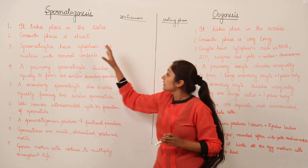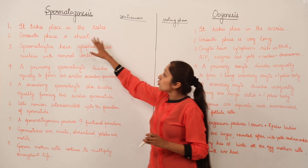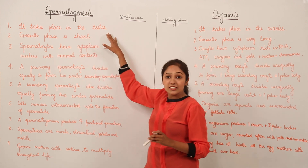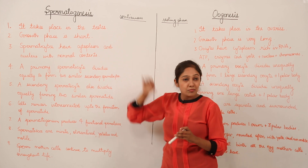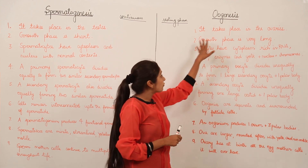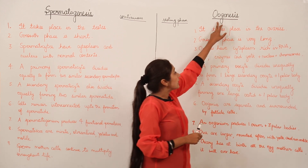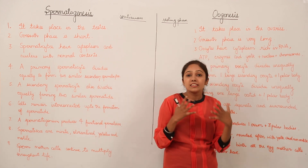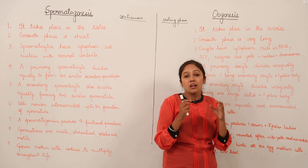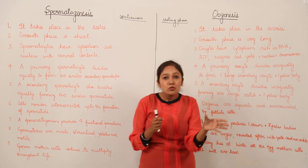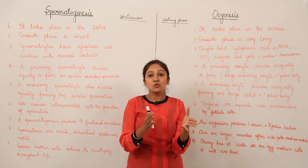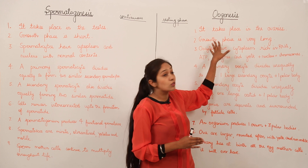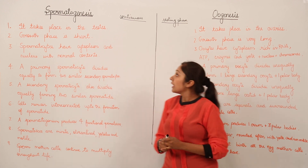The growth phase in spermatogenesis is short, but the growth phase in oogenesis is very long — it can take from a few days to many years. So oogenesis has a much longer growth phase.